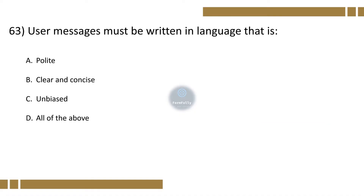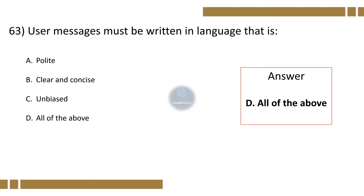Question 63. User messages must be written in language that is: A. Polite, B. Clear and concise, C. Unbiased, D. All of the above. The correct option is D, All of the above.